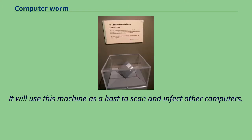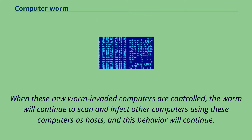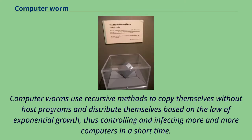It will use this machine as a host to scan and infect other computers. When these new worm-invaded computers are controlled, the worm will continue to scan and infect other computers using these computers as hosts, and this behavior will continue. Computer worms use recursive methods to copy themselves without host programs and distribute themselves based on the law of exponential growth, thus controlling and infecting more and more computers in a short time.